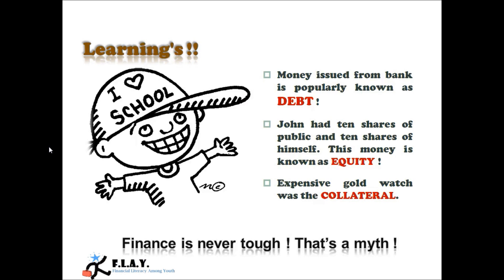The money that he issued from the bank is popularly known as debt. John had 10 shares of public and 10 shares of himself — this money is known as equity. The people who invest in equity are also the owners of the company. The expensive gold watch which John kept with the bank as security is known as collateral. These two terms, debt and equity, will come very frequently in finance, so it's good if you get familiar with these.